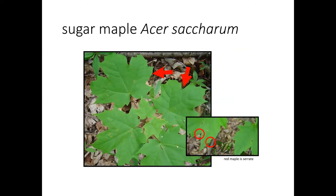Sugar maple is differentiated from red maple in a couple of ways: the sinuses on sugar maple are rounded, versus the sinuses on red maple which are acute. The leaf margin on sugar maple is smooth, while on red maple it is toothed or serrate. Another easy way to tell in the spring — red maple produces seed that drops early, while sugar maple seed is produced in spring, matures over the summer, and the seeds drop in the fall.